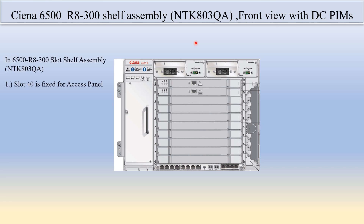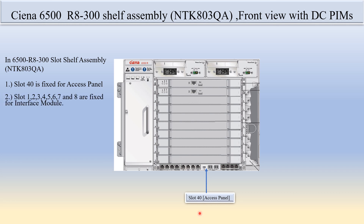In the 6500 R8300 self-assembly NTK803QA, slot 40 is fixed for the access panel. You can see here there is a slot 40 at the bottom of the shelf. The slot 40 is fixed for the access panel.